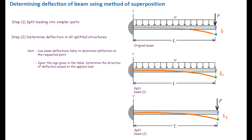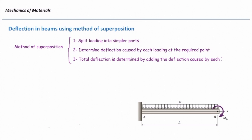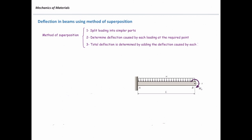We go to the table, find the appropriate figure, read the value from the table, then plug the values into that equation to determine how much is the deflection of a beam at a certain point. And in the last step, we determine total deflection at that point by adding the deflection caused by each of these loadings. This is what we call the method of superposition to determine deflection of beams.